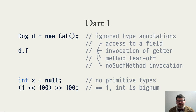Something that looks like a property access can indeed be a field access, but it can also be an invocation of a getter, or a method call, or even a no-such-method invocation. No-such-method is a mechanism similar to Smalltalk's doesNotUnderstand.